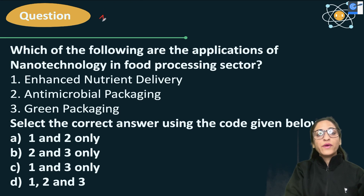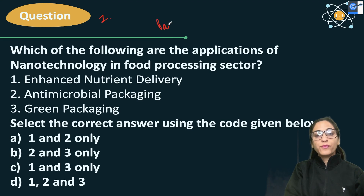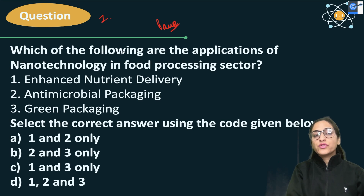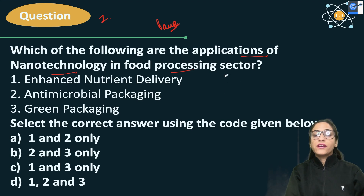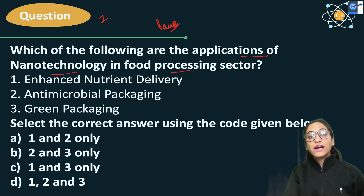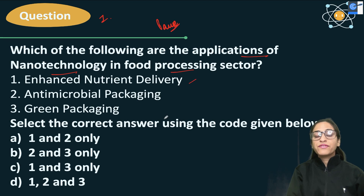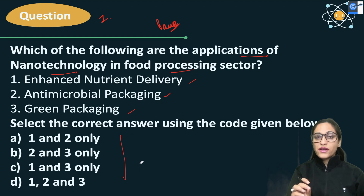Starting with the first question — the rule is simple: when I finish the question, I will tell you to pause, you answer, and then we will go to the solution. Which of the following are the applications of nanotechnology in the food processing sector? Options include enhanced nutrient delivery, antimicrobial packaging, and green packaging. You can pause right now and then see the answer.